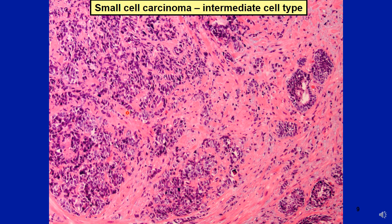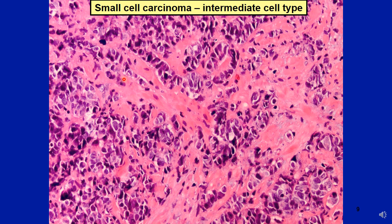Here is an example of intermediate small cell neuroendocrine carcinoma. The cells are relatively large with slightly more recognizable cytoplasm. At higher magnification, the nuclear chromatin is still even and powdery, but you may see some small nucleoli. Note the very high grade nature of the cells: brisk mitotic activity and high NC ratio. Overall you still have good features of neuroendocrine differentiation, and it is very important to perform neuroendocrine marker staining in this type of situation.